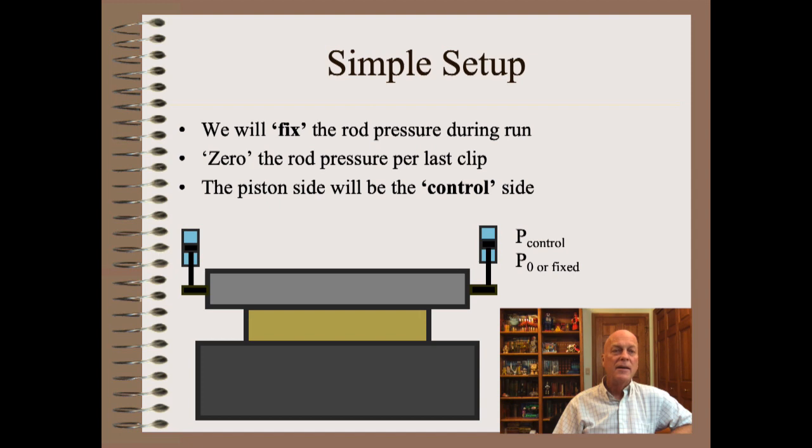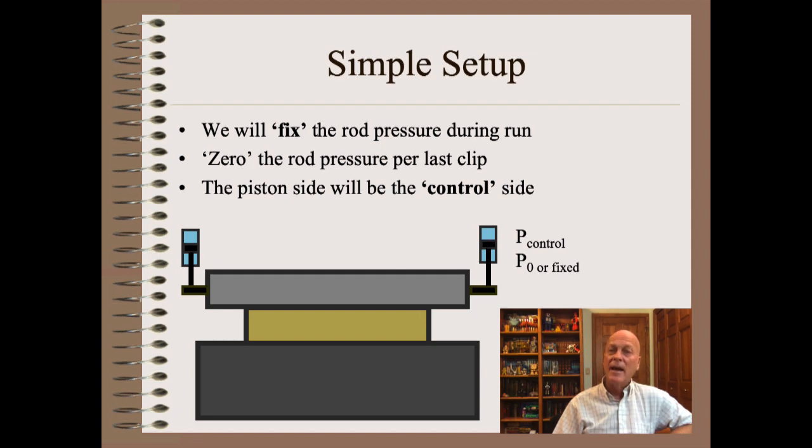Finally, piping on both sides allows us to control stroke speeds in both directions independently by needle valves on the exit side.